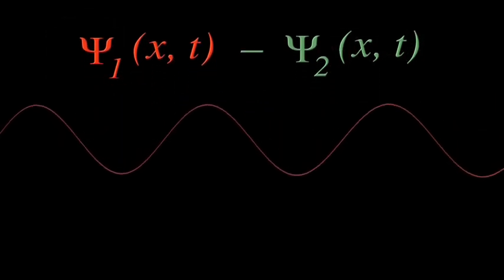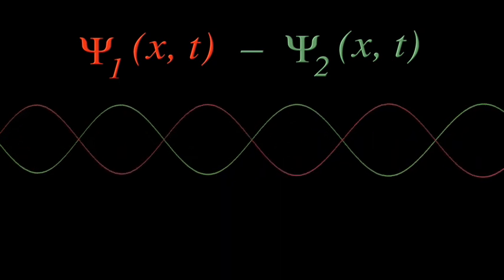Let's let this red wave represent the first part of the combined wave function. And this green wave represent the negative of the second part.